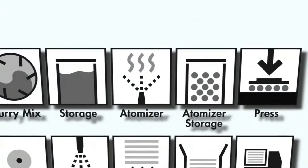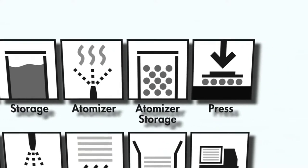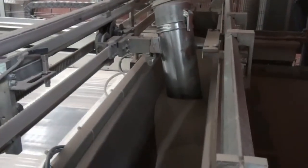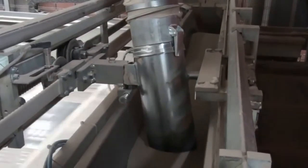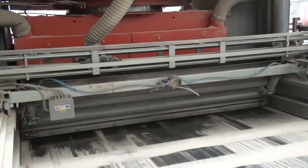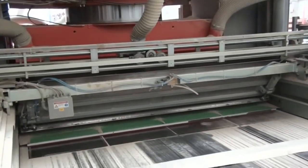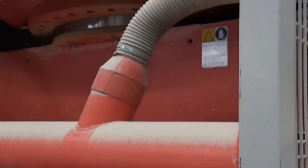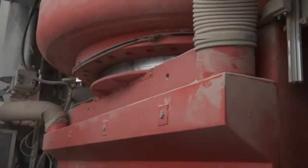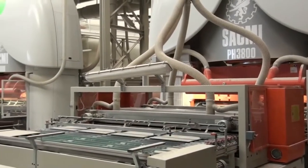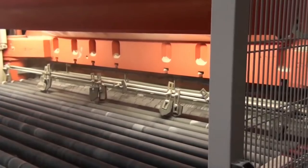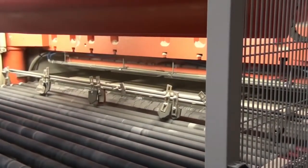The atomized powder is fed into a holding vat just behind the press. The vat releases measured quantities of atomized powder into a tray, which distributes the powder evenly into the mold. A force of 340 to 400 kilograms per square centimeter is applied using a large hydraulic press. The combination of high pressure and residual moisture turns the powder into a solid mass.